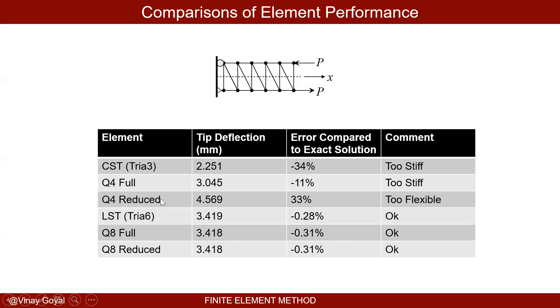The Q4 reduced integration element, which means use just less integration points than you're supposed to use, it's too flexible. But when I go to higher order elements you can see the error just got almost to zero, so it's good. In other words, use second-order elements if you can, but if it's computationally expensive you may want to start looking at trades.